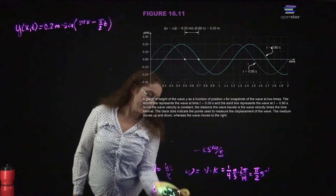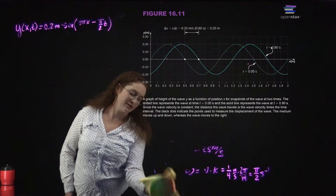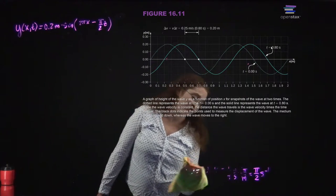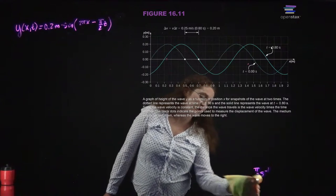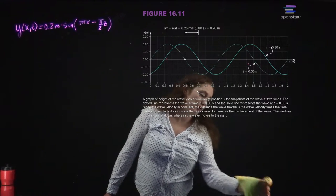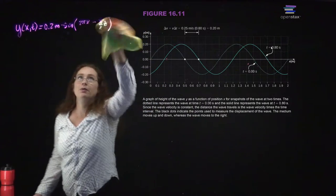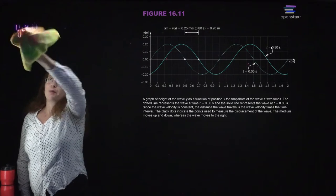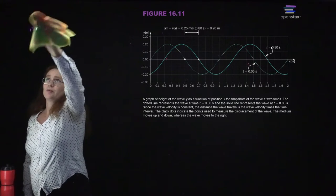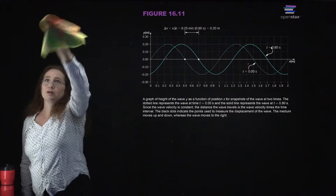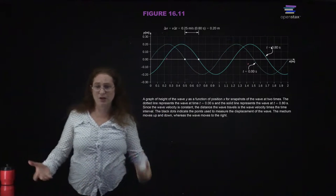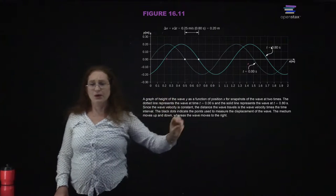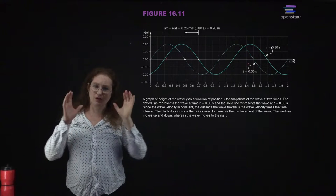There will be problems like this — some where you're explicitly told to write an equation for the wave, and others where you have to write it down to solve the problem. Most of the time when solving such a problem, wave number, wavelength, angular frequency, period, and frequency will all come up. It's a good idea to start writing those down as you read the problem so that it's unambiguous.